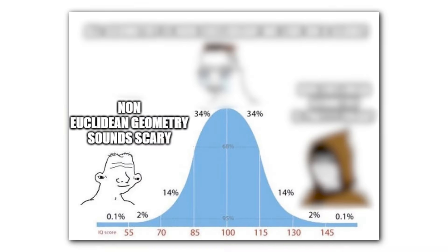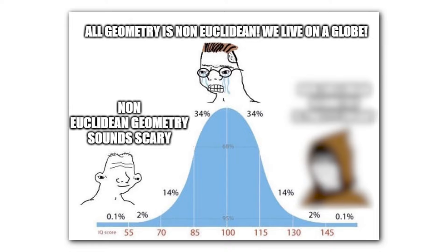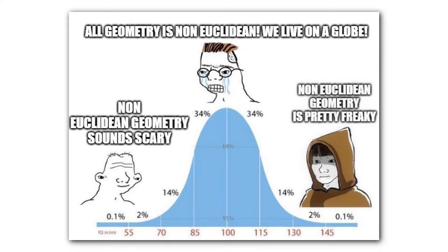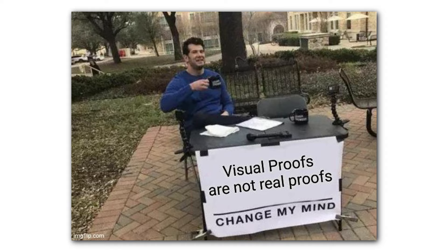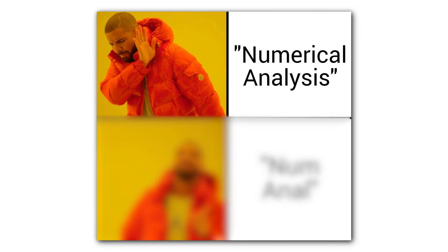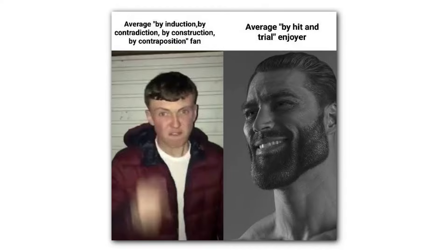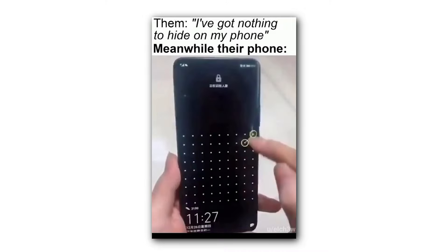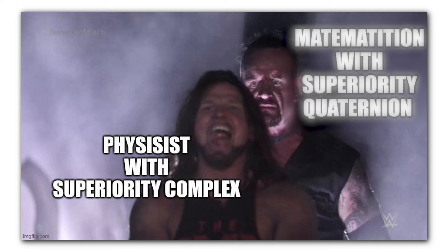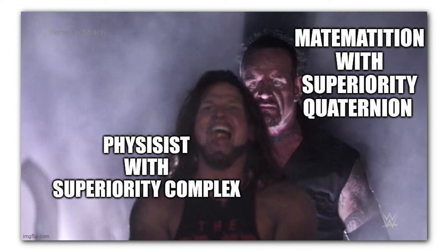Non-Euclidean geometry sounds scary. All geometry is non-Euclidean. We live on a globe. Non-Euclidean geometry is pretty freaky. Visual proofs are not real proofs. Change my mind. Numerical analysis. Num-Enel. Average by induction. By contradiction. By construction. By contraposition, fan. Average by hit and trial enjoyer. Them. I've got nothing to hide on my phone. Meanwhile, their phone. Physicist with superiority complex. Mathematician with superiority quaternion.